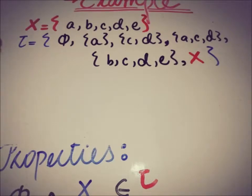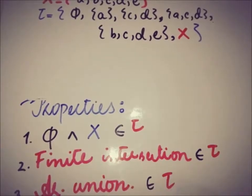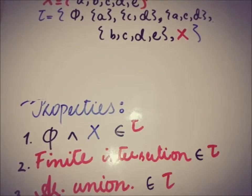You can also verify this as a topology on the set X with the help of these properties: the very first, the existence of empty set and X; the second is finite intersection; and the third is arbitrary unions.